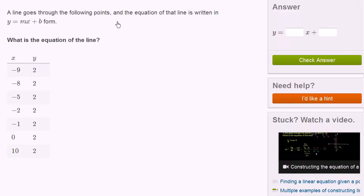A line goes through the following points, and the equation of that line is written in y equals mx plus b form, also known as slope-intercept form. What is the equation of the line?